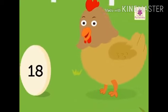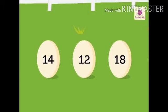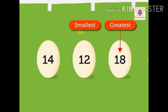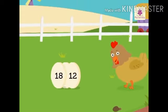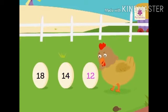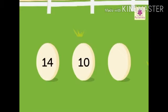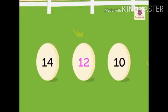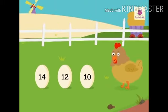Look at Daisy — she has three new numbers to arrange in descending order: 14, 12, 18. There are four ones in 14, two ones in 12, and eight ones in 18. The greatest is 18 and the smallest is 12. Hence the descending order is 18, 14, 12. Next, let's arrange 14, 10, 12 in descending order. The greatest is 14 and the smallest is 10, so the descending order is 14, 12, 10. Hope you enjoyed learning with Daisy the Hen!